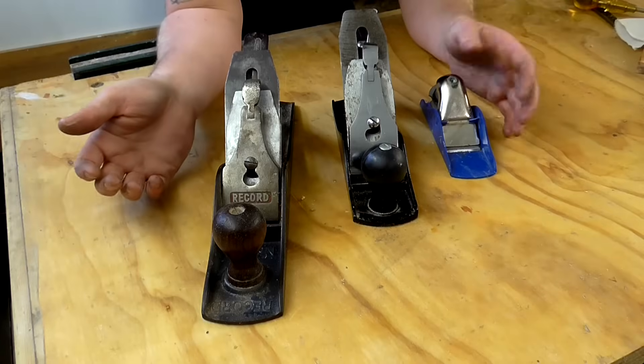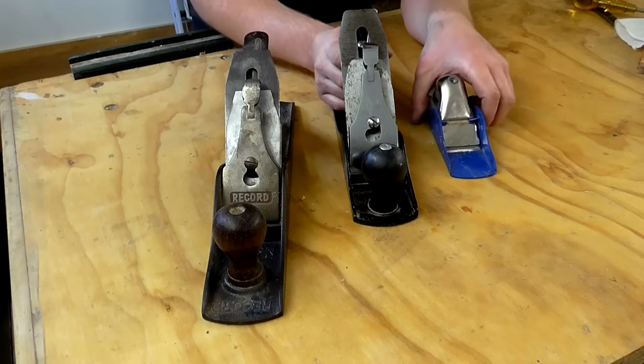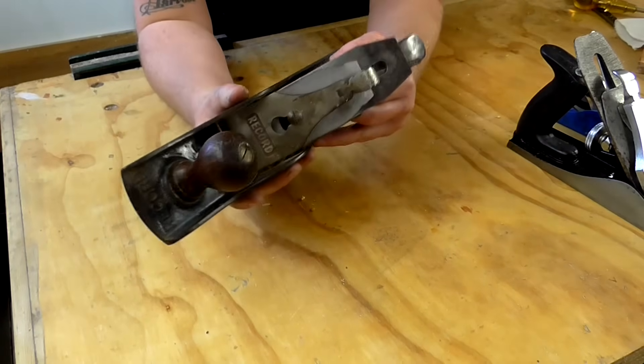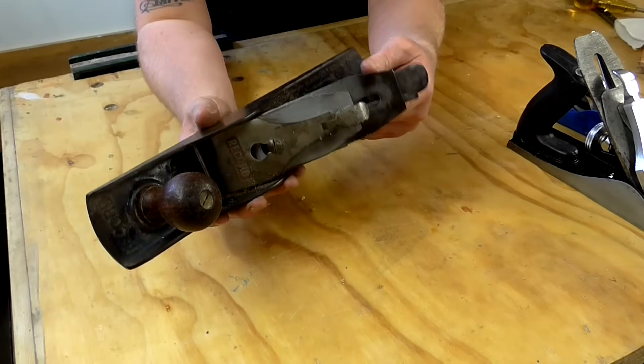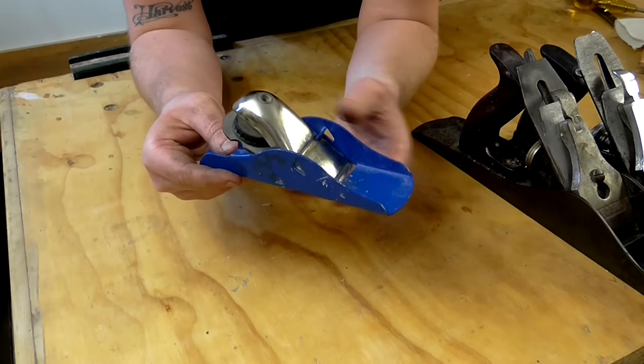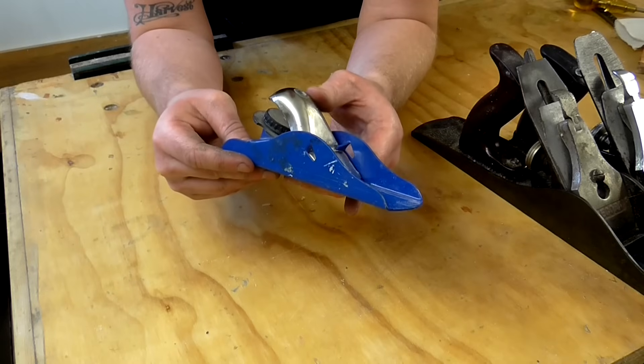I've got everything I need right here for the work that I do. And to be honest, if these two disappeared, I would be quite happy just using the record number five for everything. Having said that though, I would like to upgrade my block plane at some point. I'd like to get something along the lines of a record number nine and a half. That's it for this one. Hope you found it useful and thanks for watching.